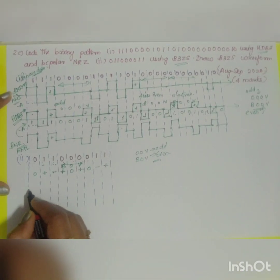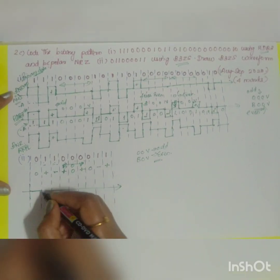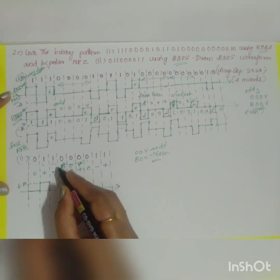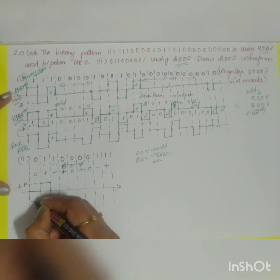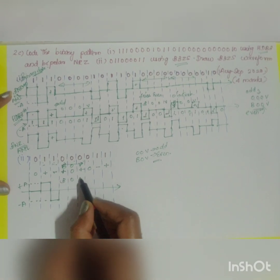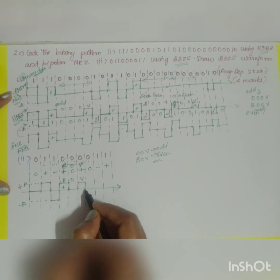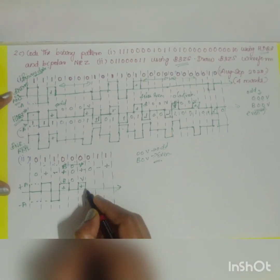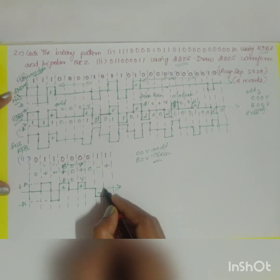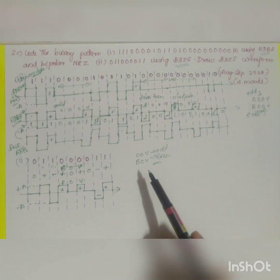Now let me draw the waveform. First zero remains at zero. Next one takes plus A. Next one takes minus A. Then the B0V replacement: B is plus A, next is zero, and the violation is also plus A — it violates the bipolar rule because the previous was positive. Next is zero, then one is negative (previous positive), and the final one is positive. This is how you replace using B3ZS coding.